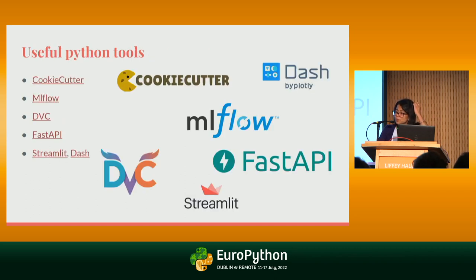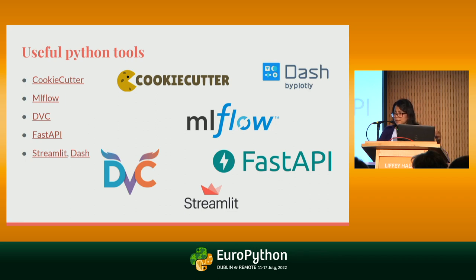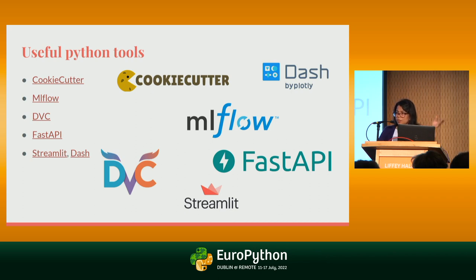Some useful Python tools: CookieCutter is basically a template for building the structure of a data science project. You can also use MLflow — very good for tracking experiments. DVC is like GitHub but for data, helping with data version control. FastAPI is very fast for implementation. And Streamlit or Dash, for example, if you need to make a quick dashboard to present your results.